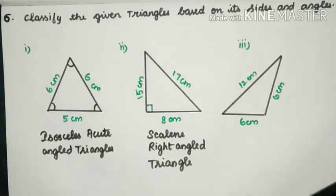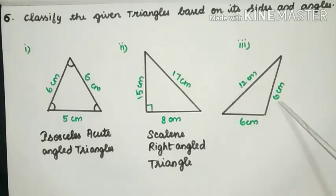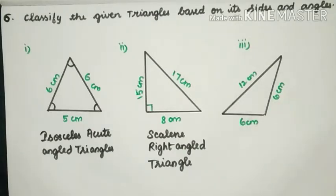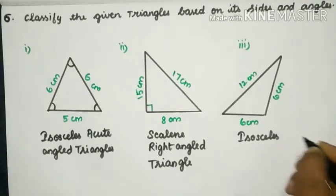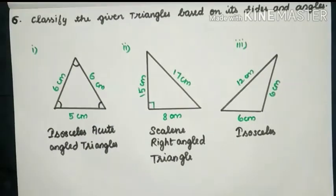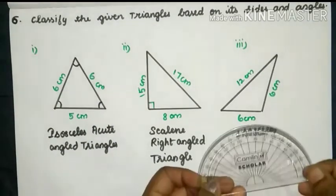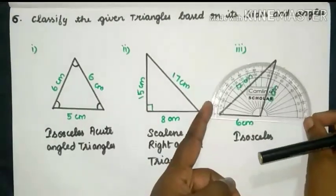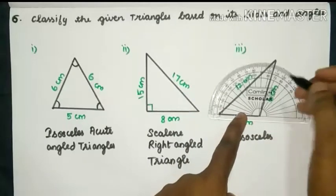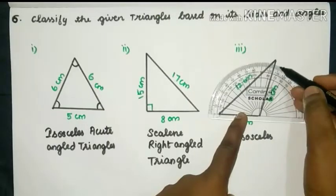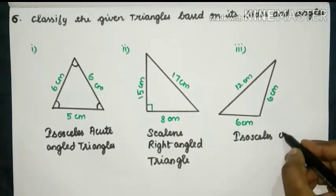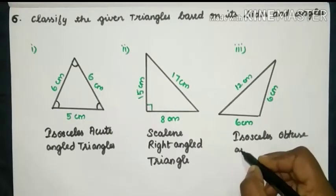Let's move on to the third one. Here two sides of the triangle are equal — two sides are 6 cm and the other one is 12 cm. If two sides are equal, it is an Isosceles triangle. The angle is 105°, which lies between 90° and 180°, so it is an Obtuse Angled Triangle. Therefore it is an Isosceles Obtuse Angled Triangle.